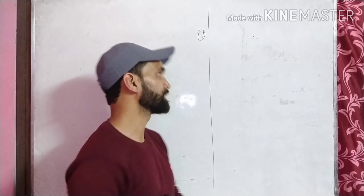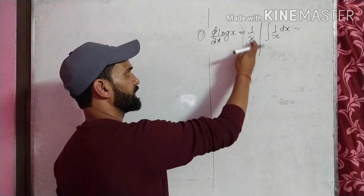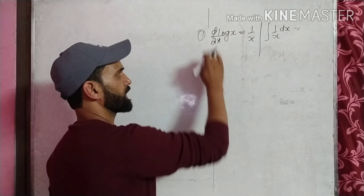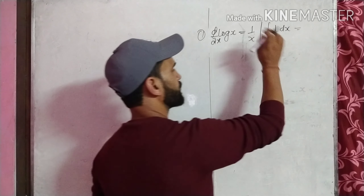If we find out the integration of 1 upon x, the solution is log x. So remember this: the derivative of log x is 1 upon x, and the integration of 1 upon x is log x.